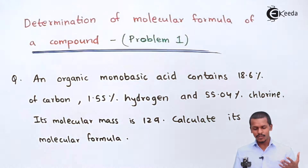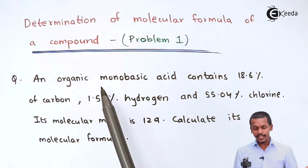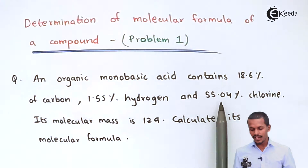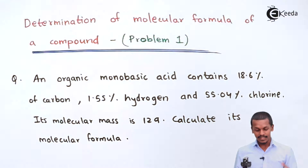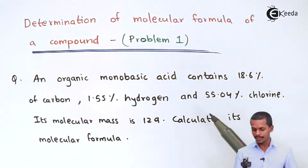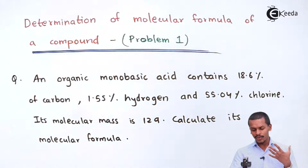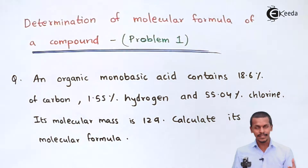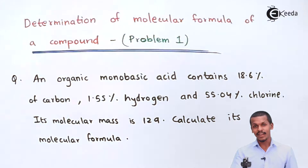The question is to determine the molecular formula of a compound. An organic monobasic acid consists of 18.6% carbon, 1.55% hydrogen, and 55.04% chlorine, and the molecular mass of the organic compound was found to be 129. We have to calculate the molecular formula. By summing up all the percentages of carbon, hydrogen, and chlorine — if we get 100%, oxygen is not present; if not, the remaining amount to complete 100% is the percentage of oxygen.